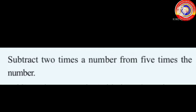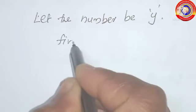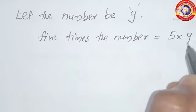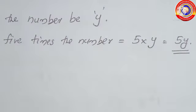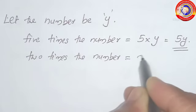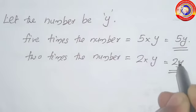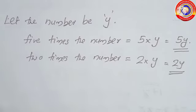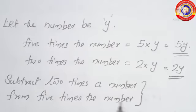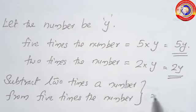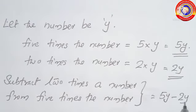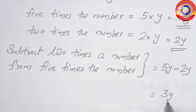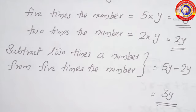Next question from textbook page 39: subtract 2 times a number from 5 times the number. Assume the number as y. Then 5 times the number is 5y, and 2 times the number is 2y. Subtracting: 5y minus 2y — since 5 minus 2 is 3 — gives 3y. So subtracting 2 times a number from 5 times the number gives 3 times the number.